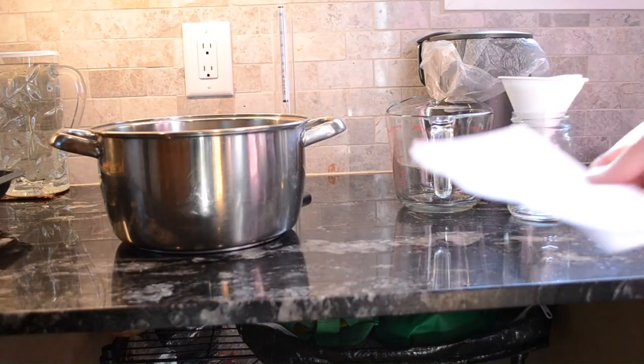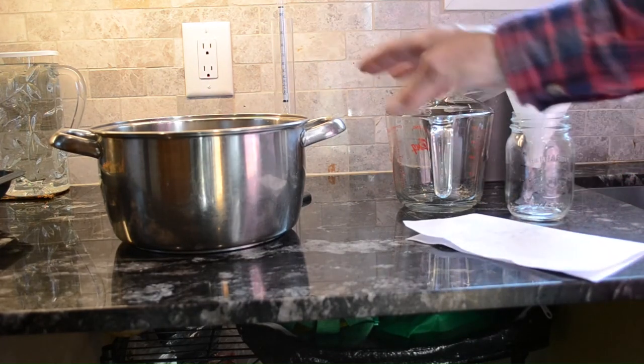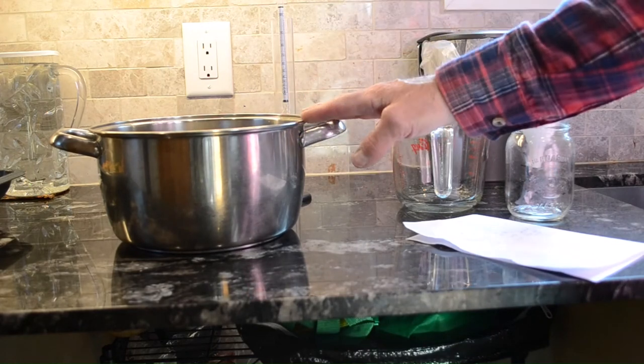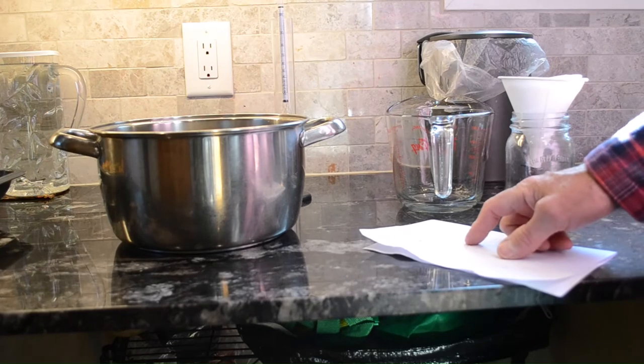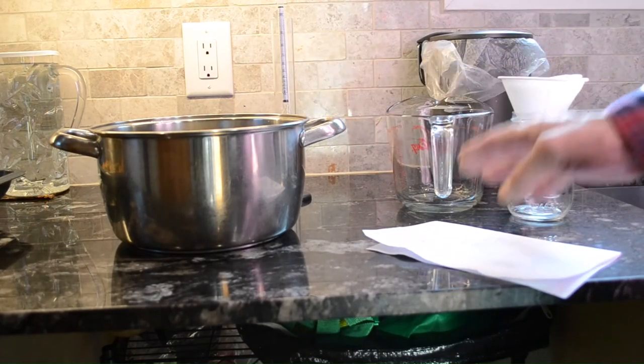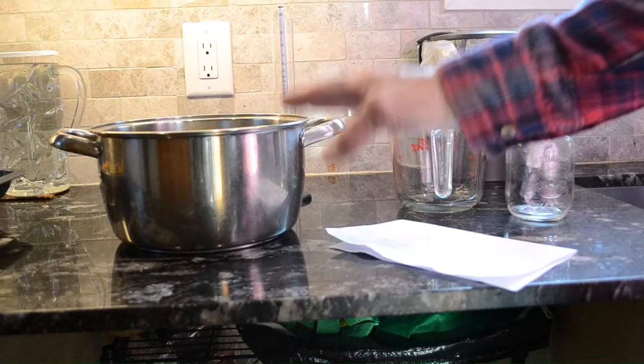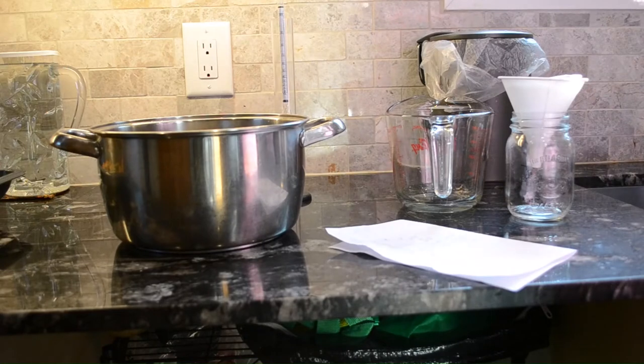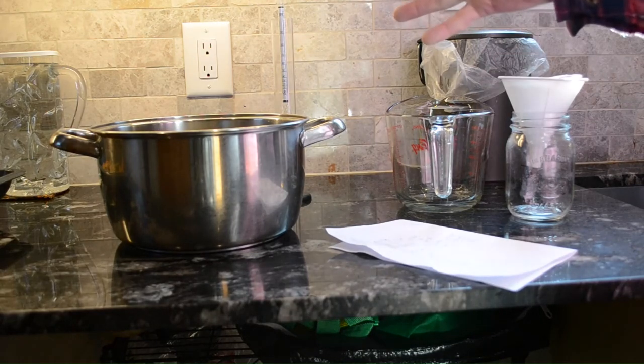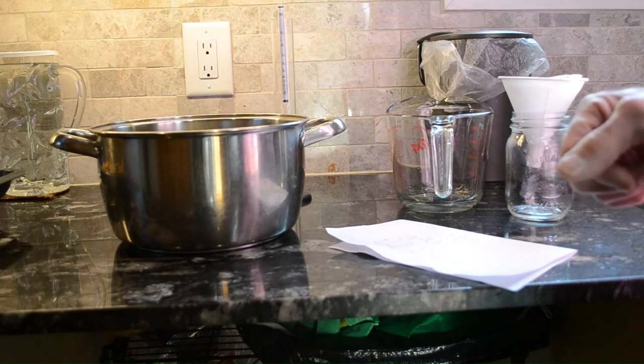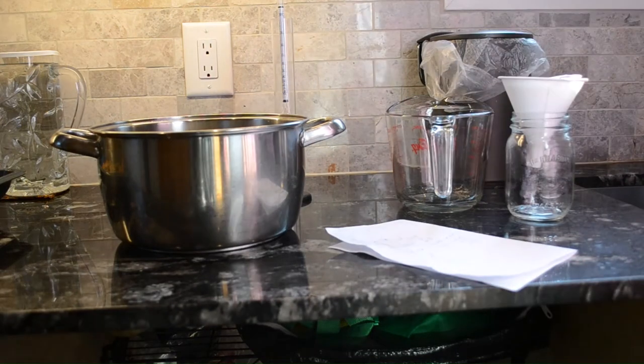I've determined that I have 3.75 liters of white dog, you could say whiskey - not quite whiskey yet until we age it - 3.75 liters at 74 percent. So if I multiply 3.75 times 0.74, I end up with 2.77. So there's of pure alcohol, there's 2.77 liters in this container. Now I want to bring this average from 74 percent up to about 62 percent for the purpose of aging. I divide 2.77 by 0.62 and I end up with 4.47. Subtract that from my - that's my total volume I need. A total volume of 4.47 with that amount of alcohol in there in order for that to be at 62 percent. So I'm going to add 0.72 liters of water, and it's going to be distilled water.